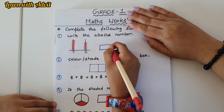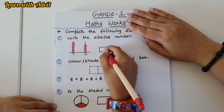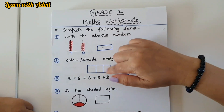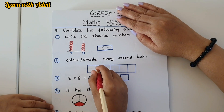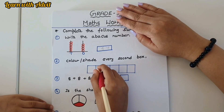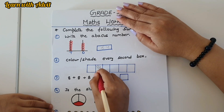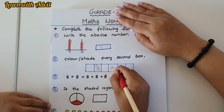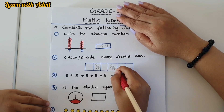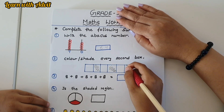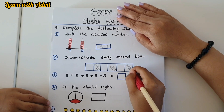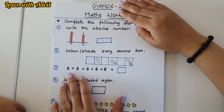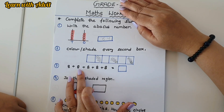So the number is 64 — very good! Color or shade every second box. This is an example of ordinal numbers. You have to shade every second box: this is the first second box, this is the second second box, and this is the third second box.